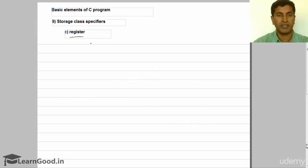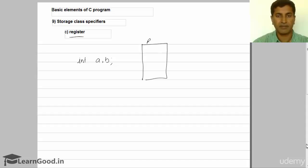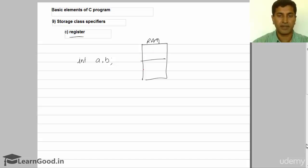Let's talk about the register storage class specifier. Whenever you declare a local variable, any variable when you define it, all variables will be stored inside random access memory. If these are auto variables, they will be stored inside a stack area, whereas if it is a static variable, it will be stored in an initialized variable area.